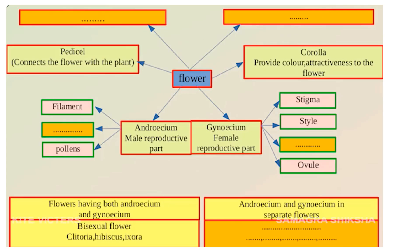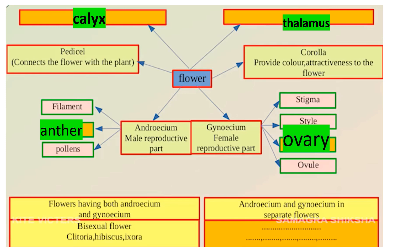Let's discuss the next chapter. First is the flower. The main parts of the flower are called Corolla, Androecium, and Gynoecium. We will also discuss Calyx and Thalamus. The main parts of the flower also include Stigma, Ovary, and Ovule.